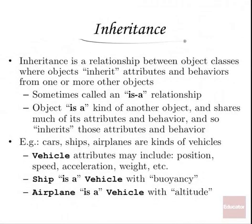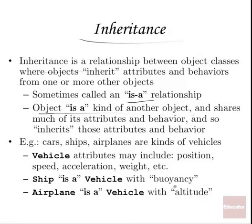Now, inheritance. You may hear a lot about inheritance dealing with object-oriented programming. It's a very valuable part — one of the things that really distinguishes it from procedural programming. It's a relationship between the object classes. In particular, it's sometimes called an is-a relationship. An object is a particular special kind of some other object. A car is a vehicle. For example, we have cars, ships, airplanes — they're all different kinds of vehicles.